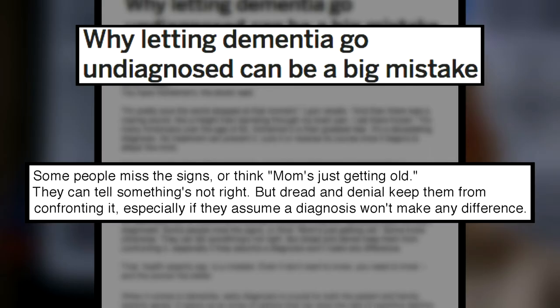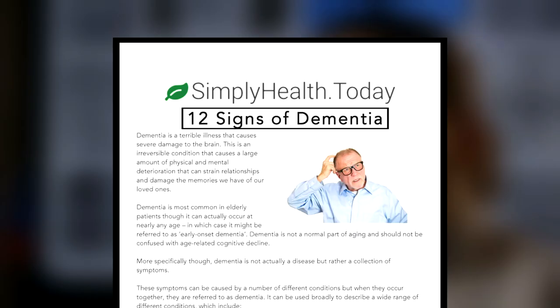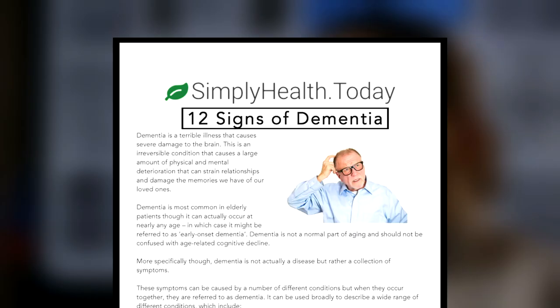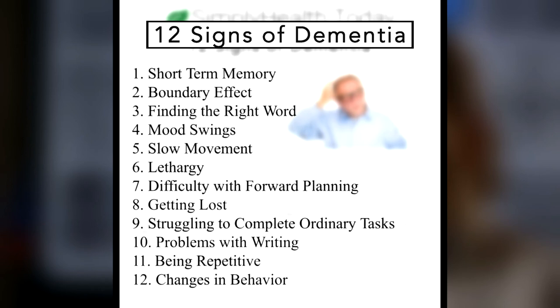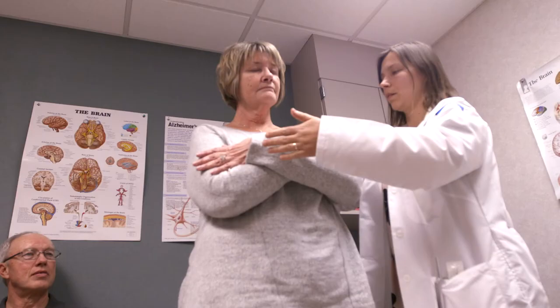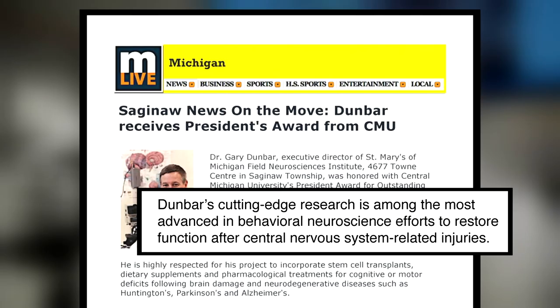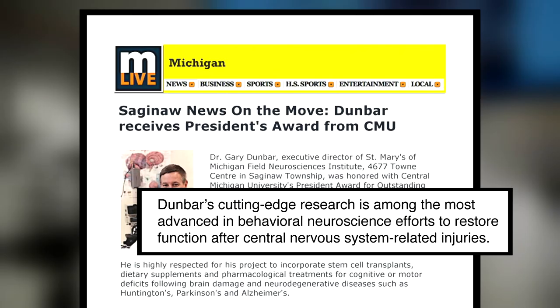The problem with Alzheimer's when somebody becomes symptomatic is that the brain already has had a major injury. There's a lot of atrophy. There has been a lot of accumulation of plaques and tangles that have destroyed important centers of the brain. So by the time we start treating our patients, unfortunately we cannot improve anything. We can only perhaps for a period of 6 to 12 months decrease the speed of the decline with the current medications that we have.